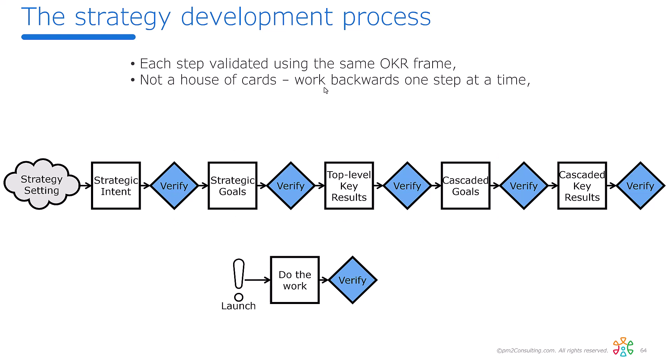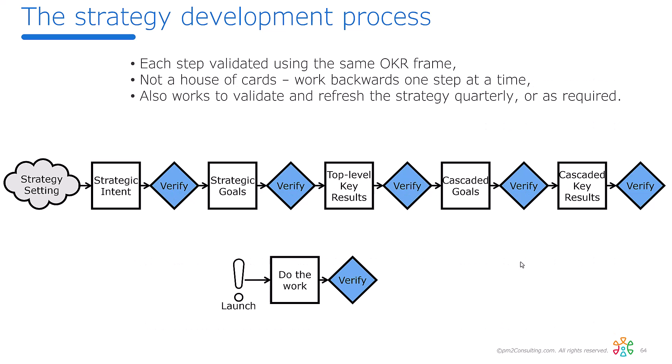The second benefit is it's not a house of cards. If you fail any verification phase, you just go back up to the previous set where you succeeded and recast the next step. This allows a more structured and agile approach to management, which means you can do this refresh at any point in time — whether it's once a quarter as proposed with OKRs, or whenever a trigger event happens like COVID, a product merger, or launch. That's where OKRs fit in — that verification process makes it easy.